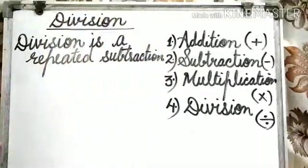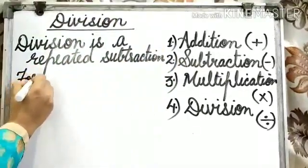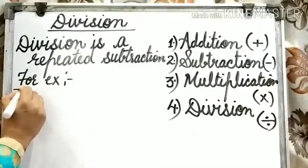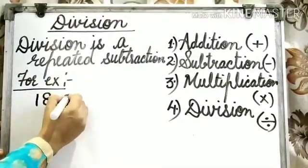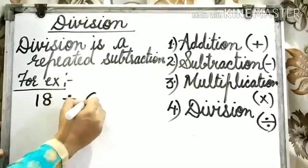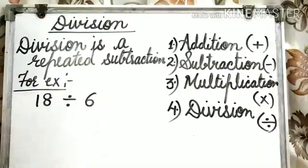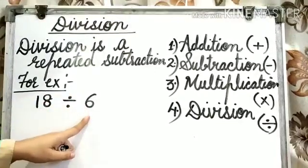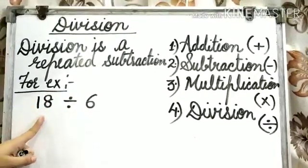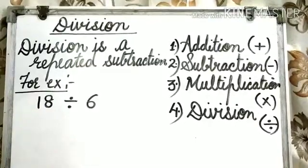For example, 18 divided by 6. How many times would you subtract 6 from 18 to reach 0? Let's check.